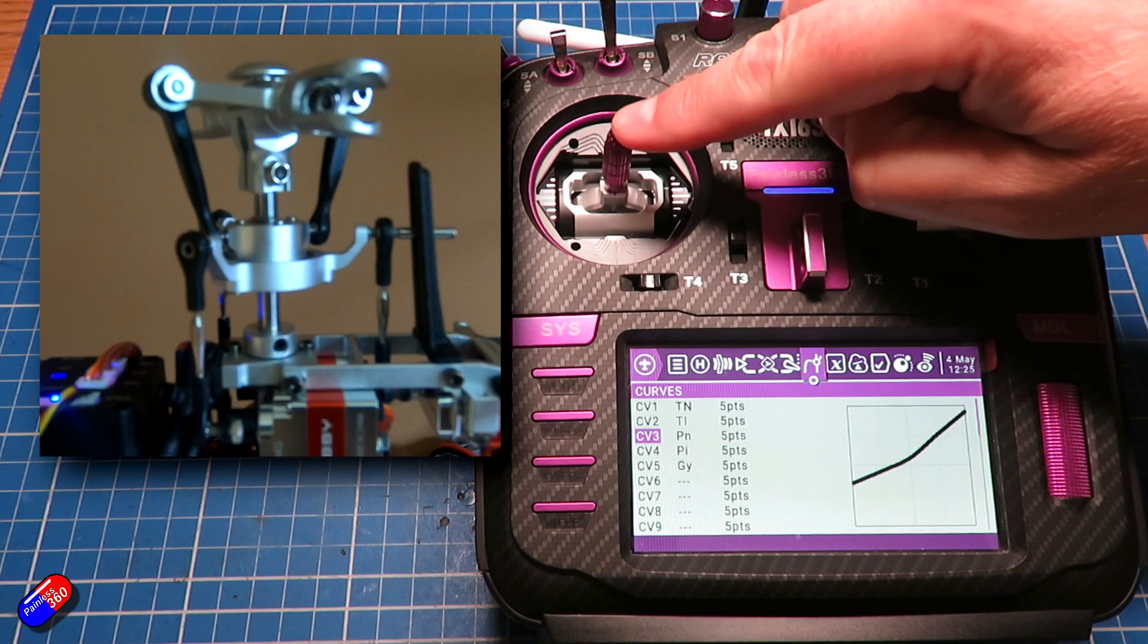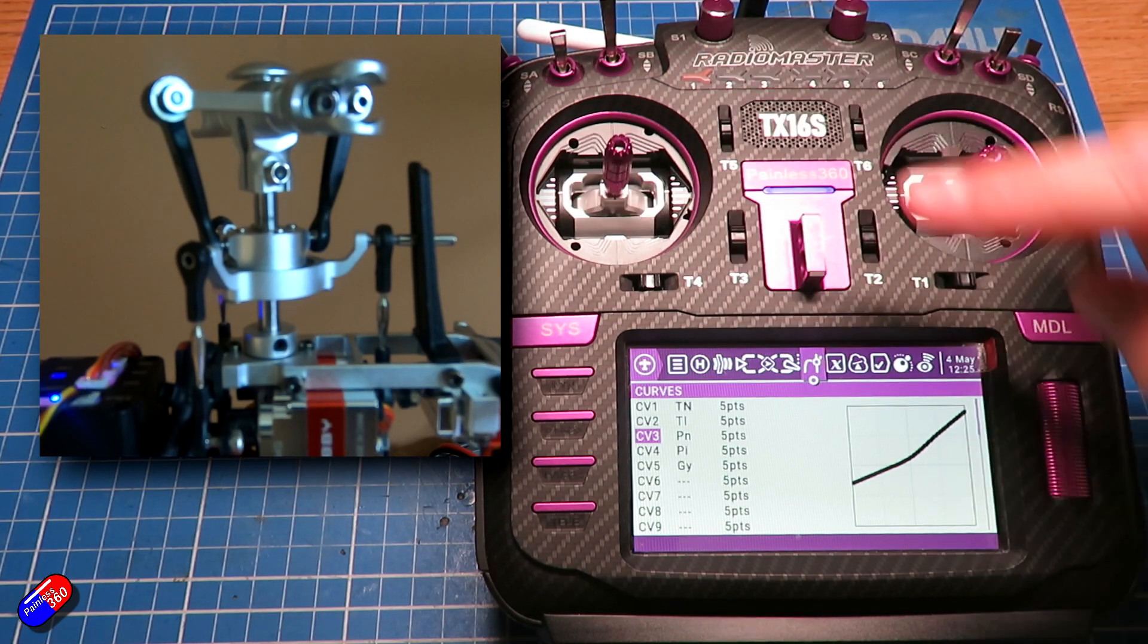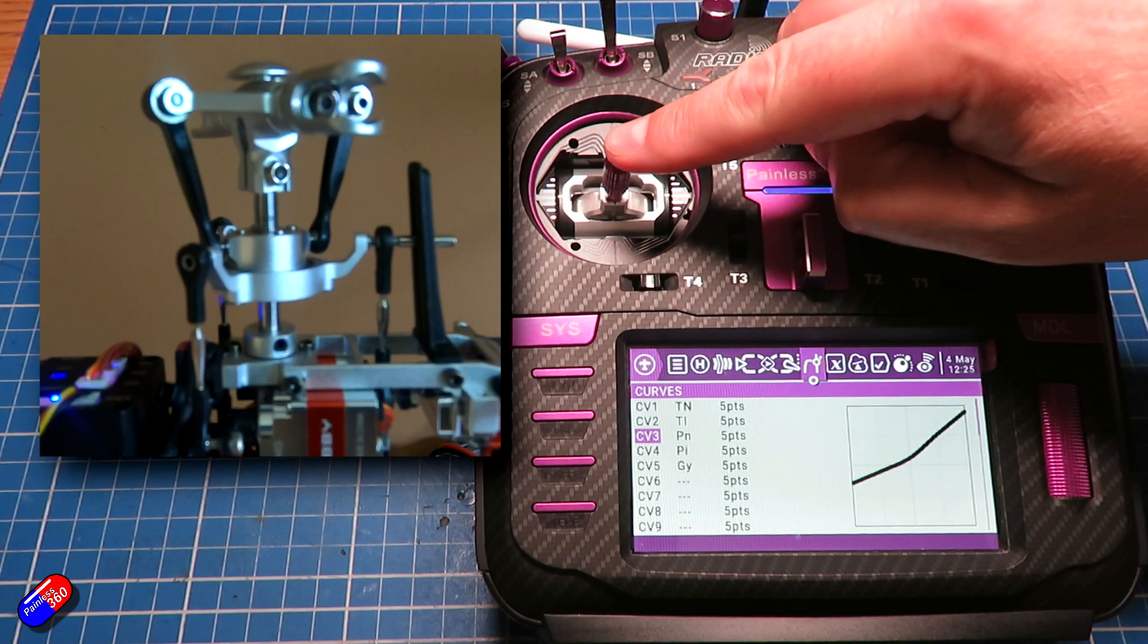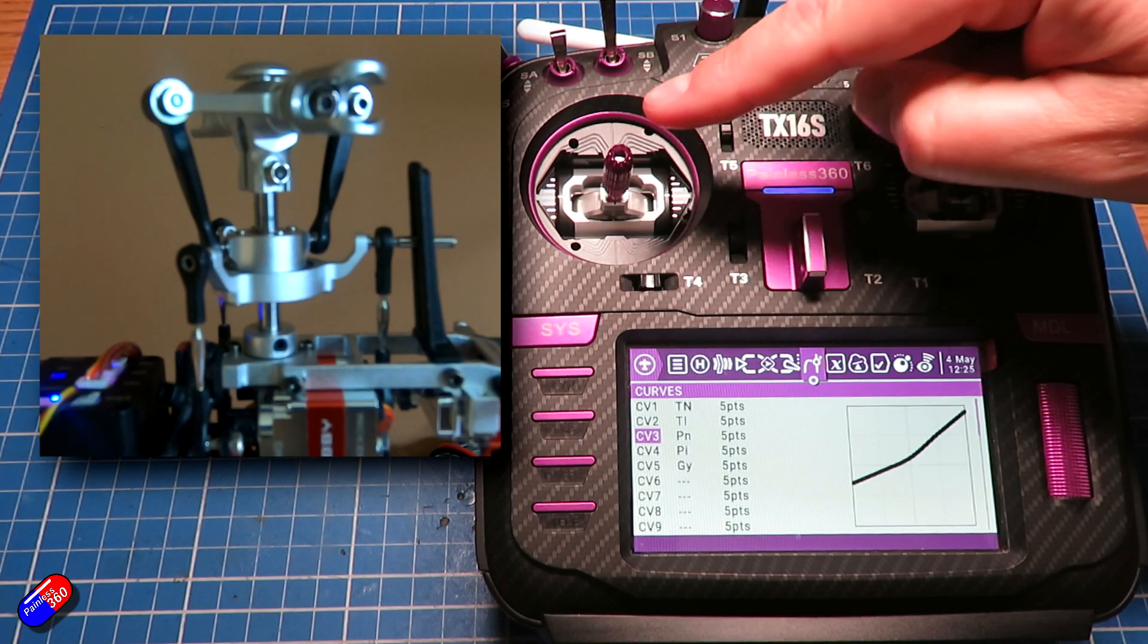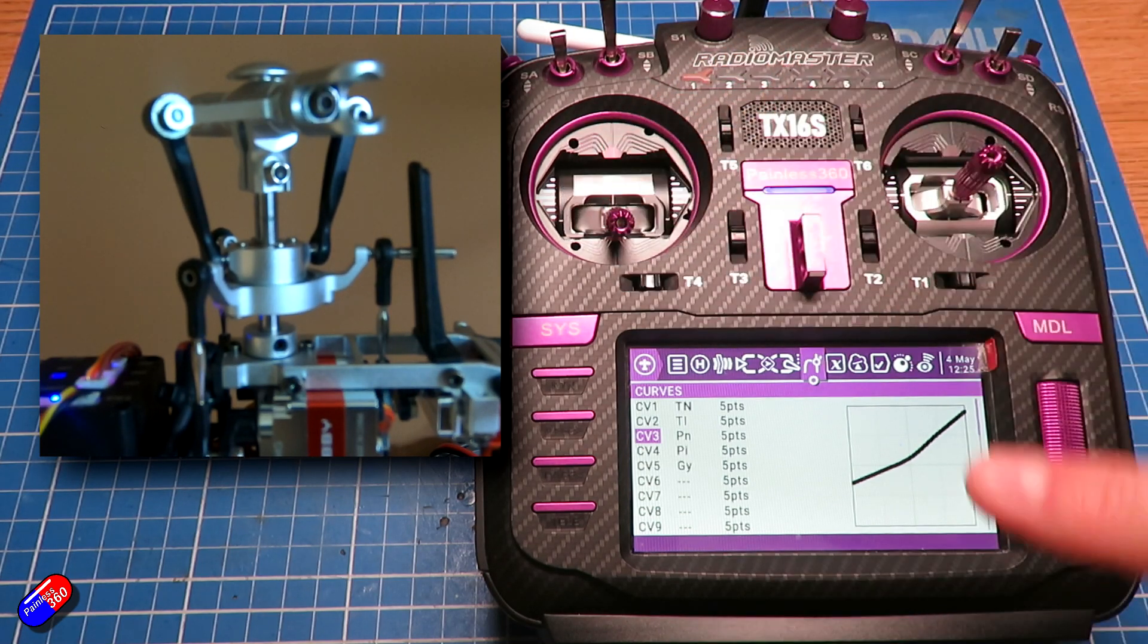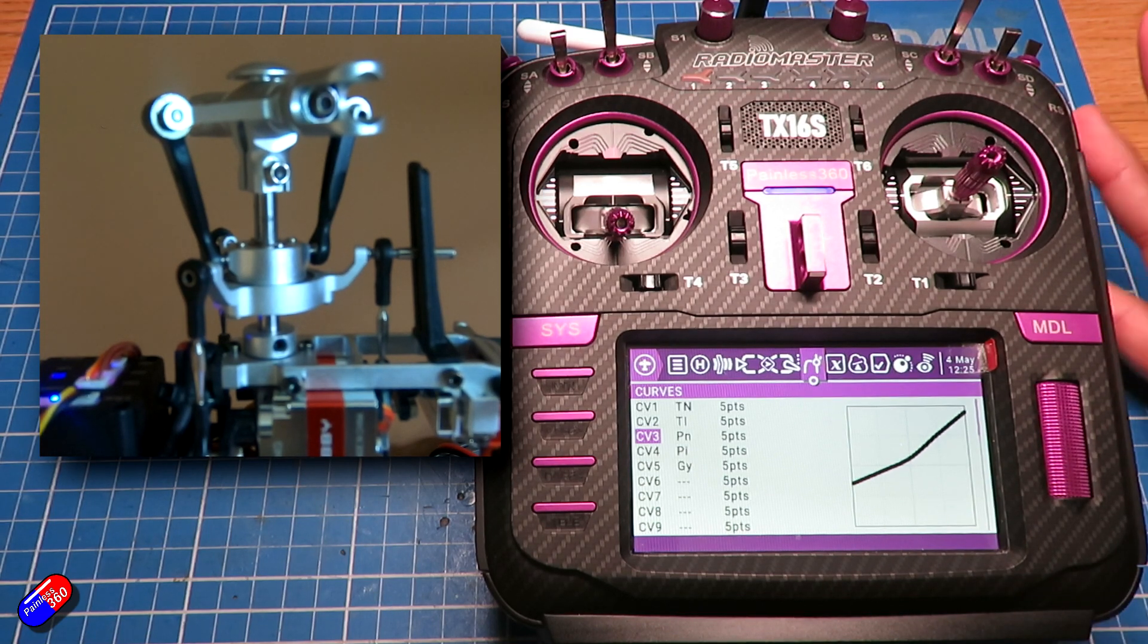So I get lots of positive increase from the middle position to the top because that's that part of the curve there. See that? Quite a bit of positive pitch change, but from the middle position down I only get a very little bit, and the reason for that is because that's shallower and this is what you tend to use in normal mode.